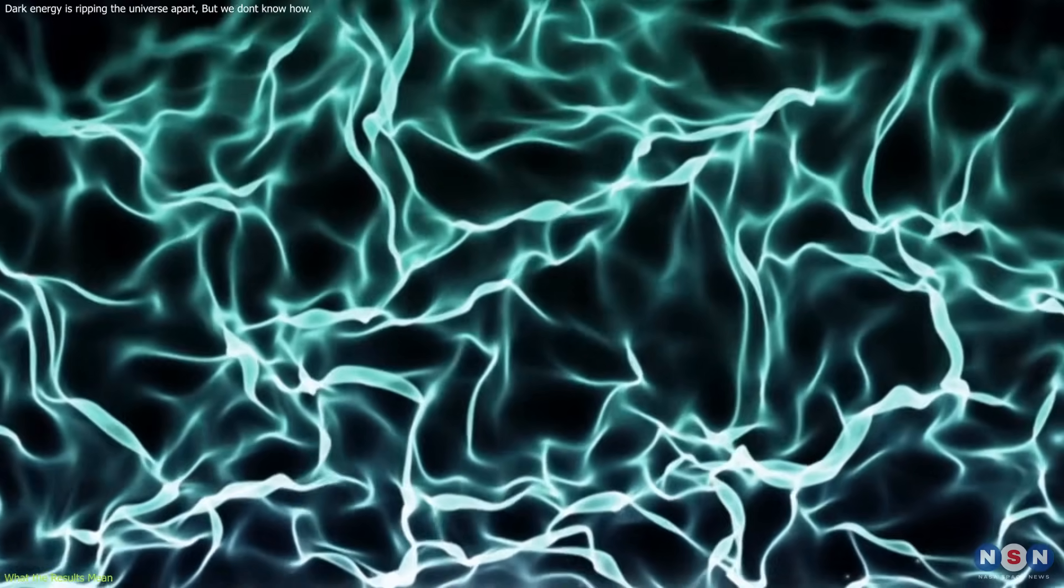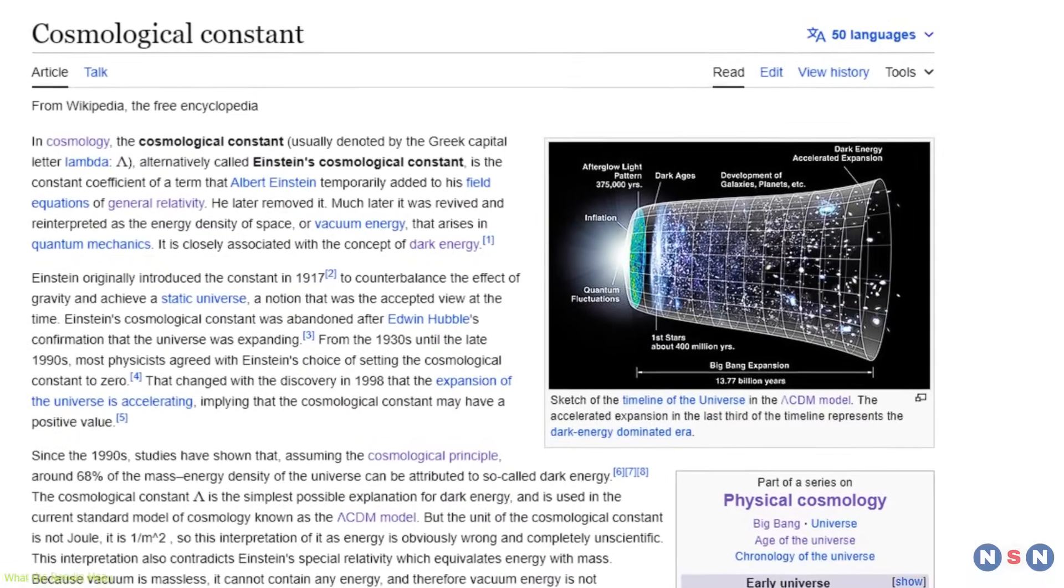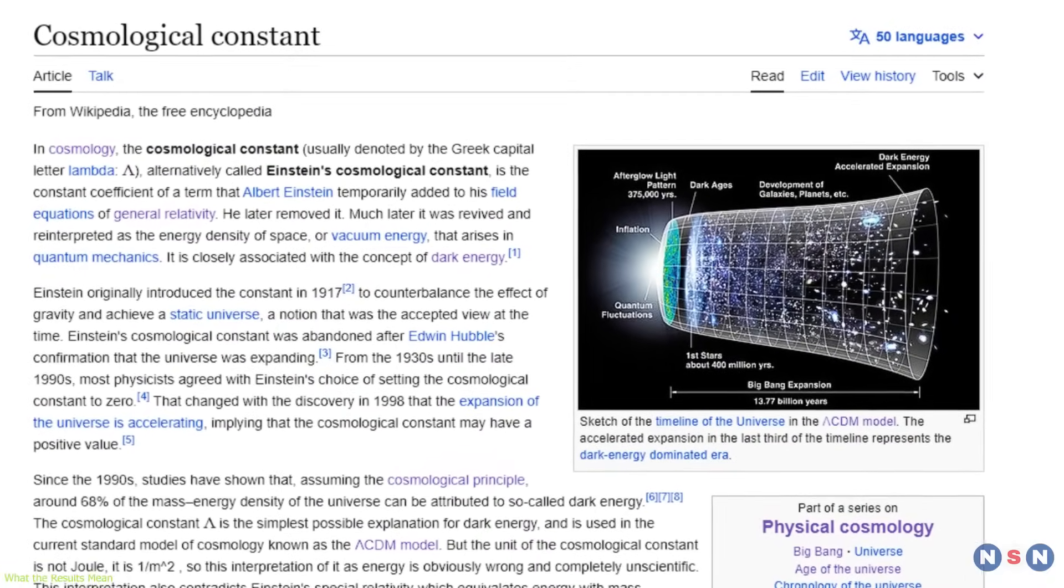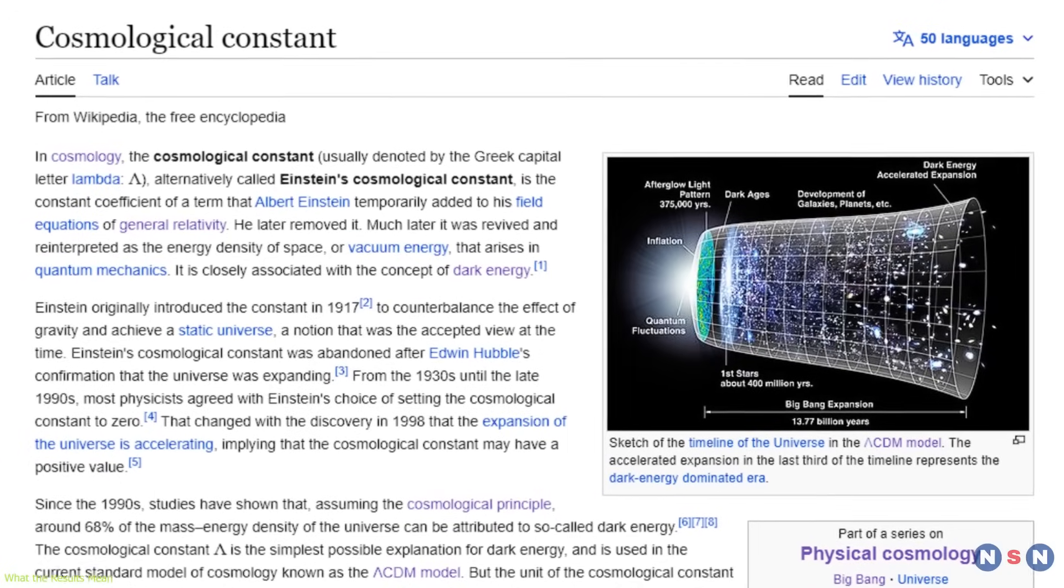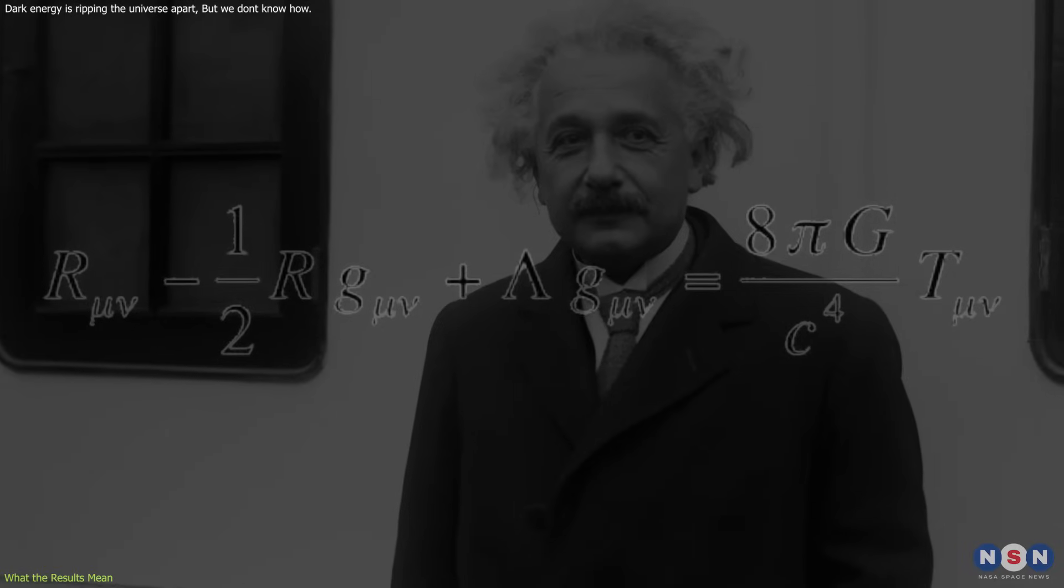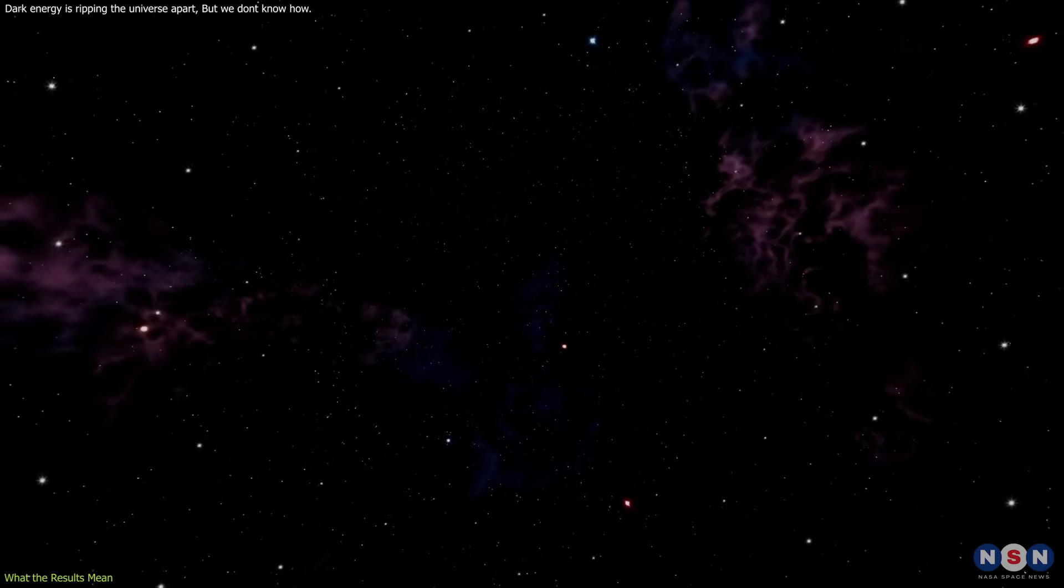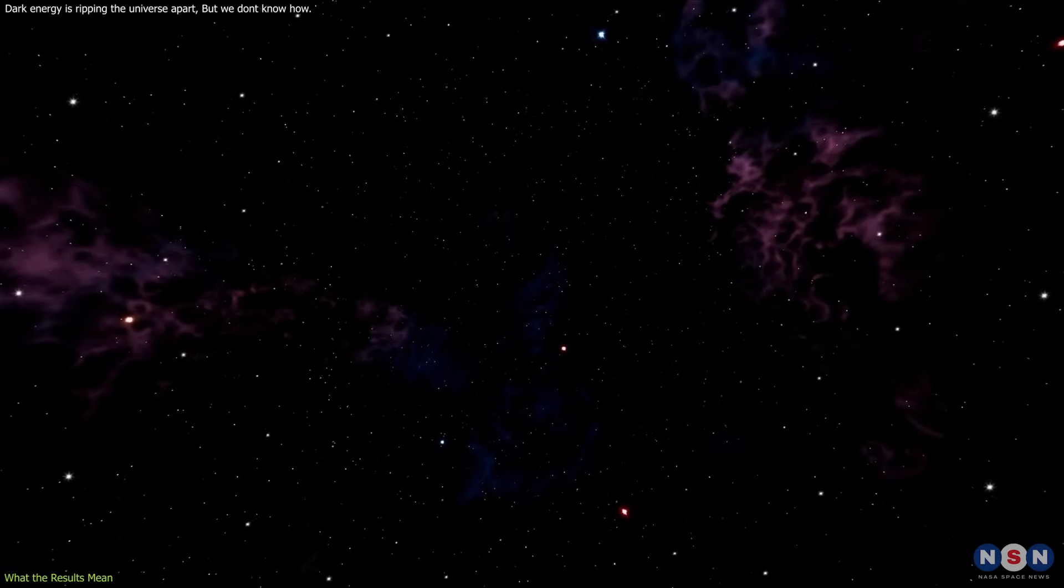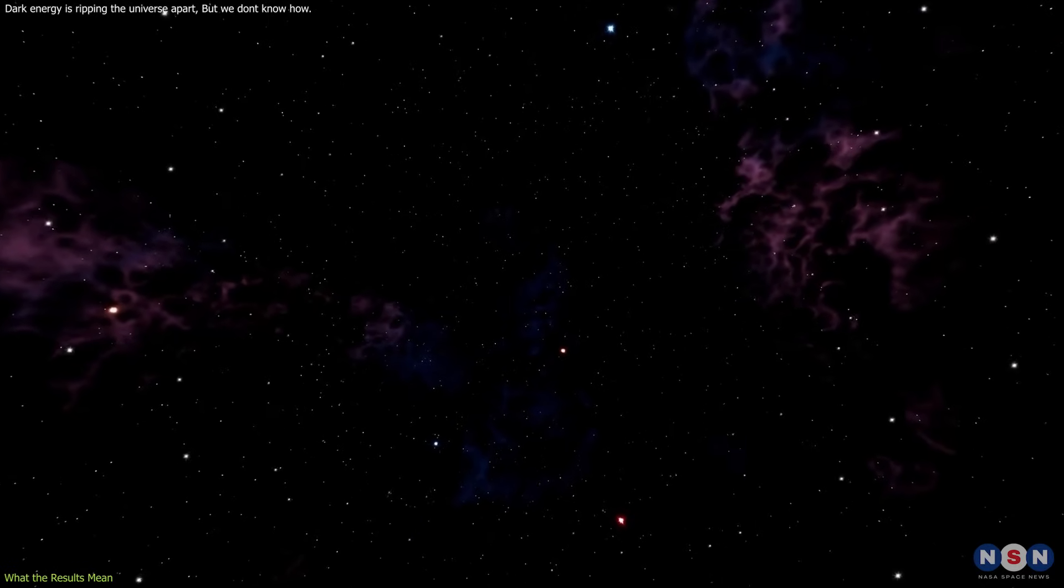This also means that the properties of dark energy are consistent with those of a cosmological constant, which is a constant energy density that does not change over time. This constant was first introduced by Einstein in his equations of general relativity as a way to balance the gravity of matter and keep the universe static.